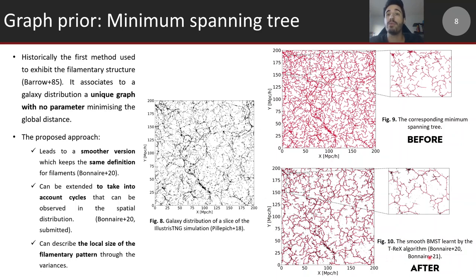You see that you obtain something that is much smoother and representing the local geometry of the data very accurately. It leads to a smoother version of the minimum spanning tree. You can also extend it to take into account cycles using random subsampling, and you can have a description of the local size or local width of the filament using the variances that are learned during the process.